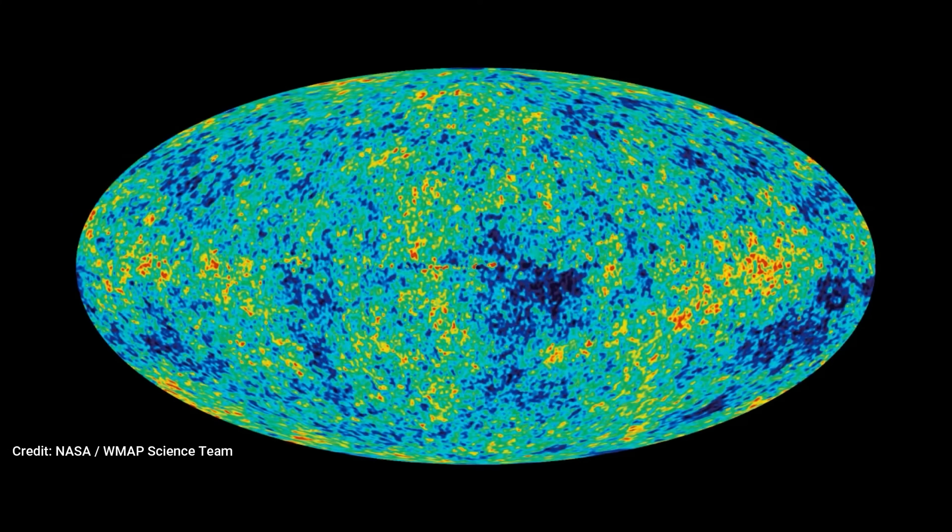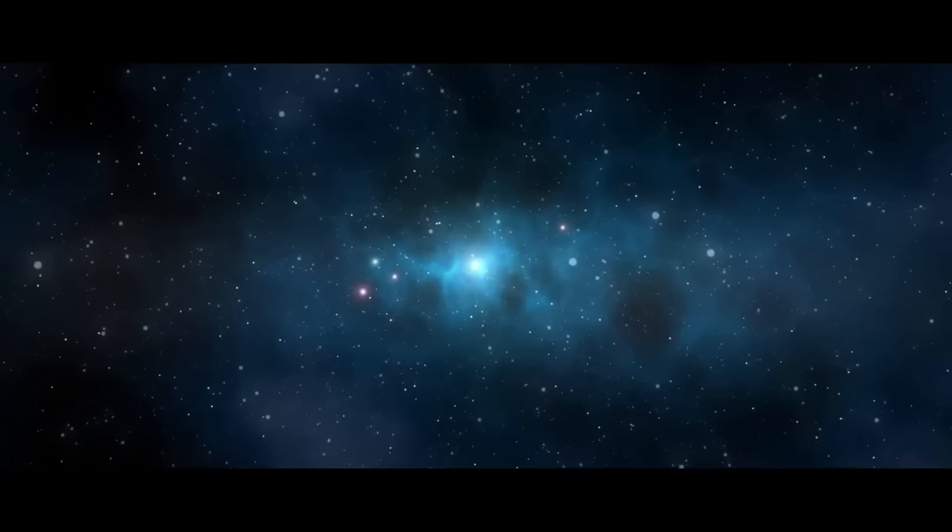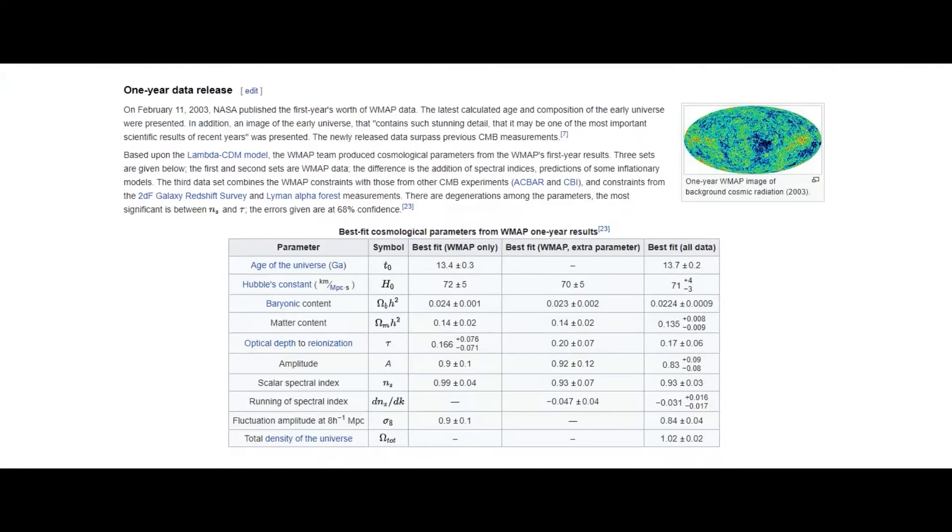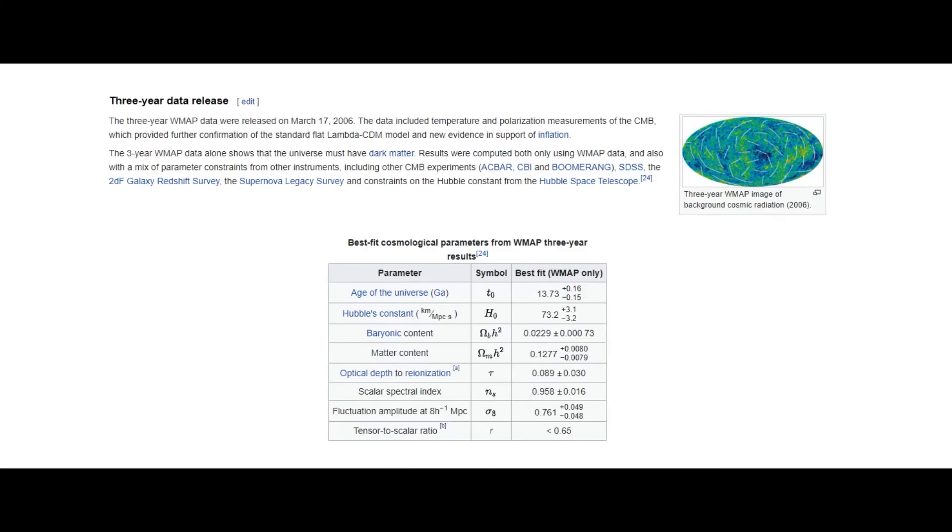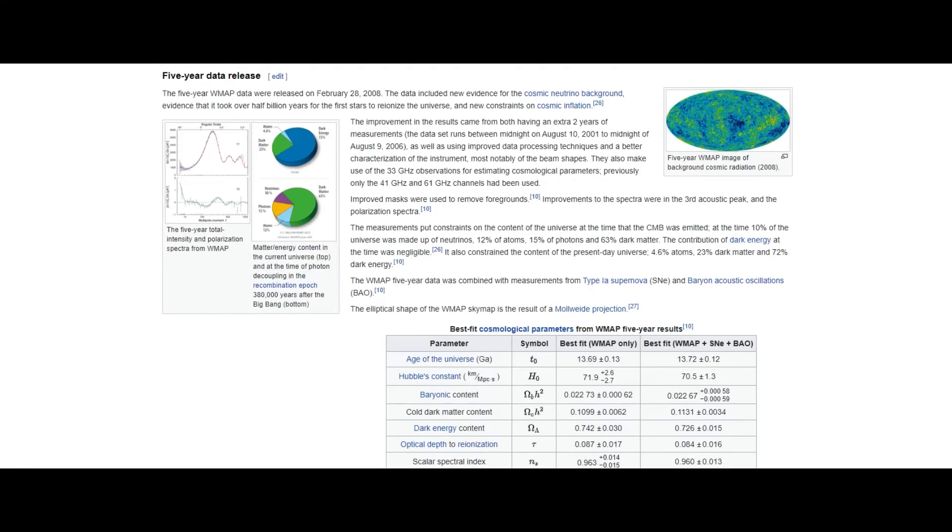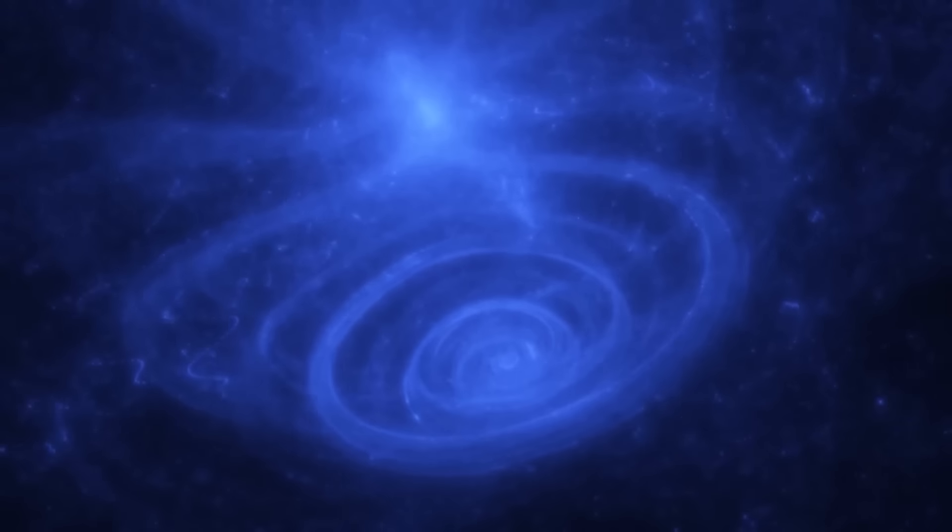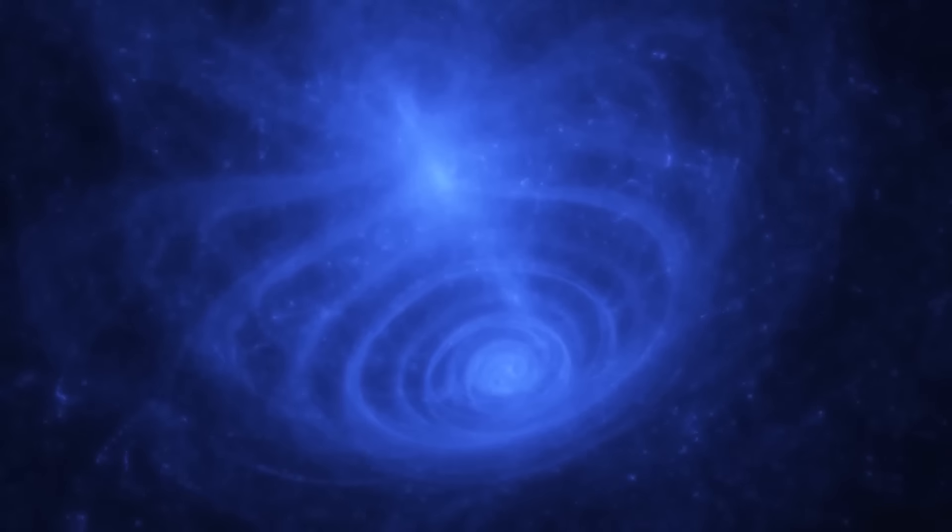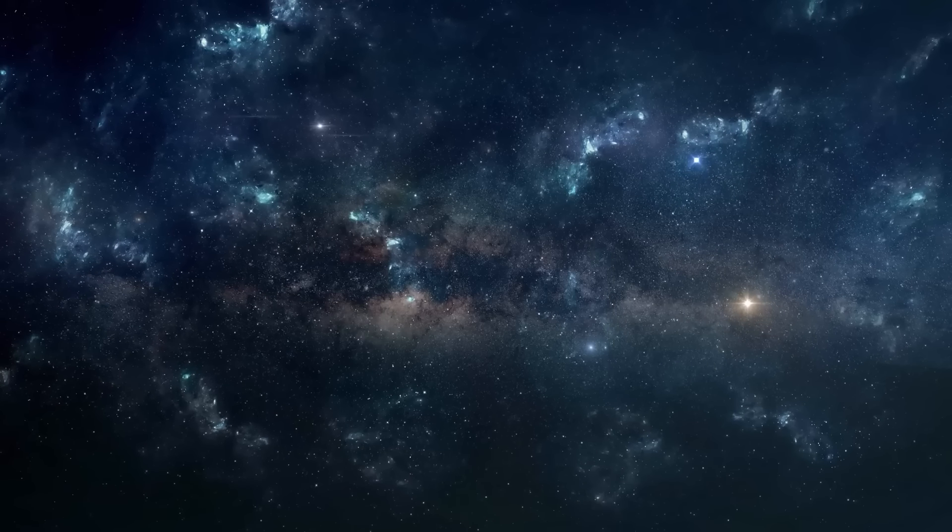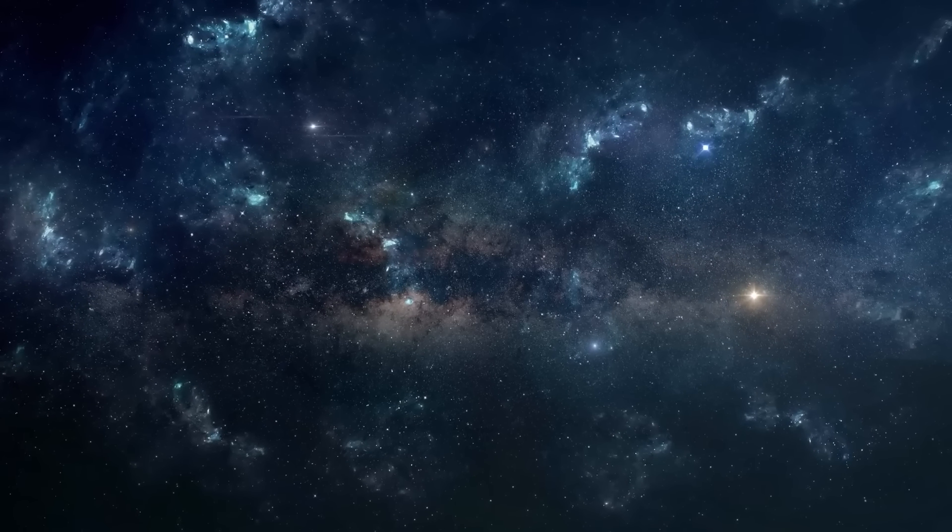One plausible explanation put forth by astronomers is the gravitational influence exerted by massive structures located outside the Hubble volume, the sphere within which we can observe cosmic phenomena due to the finite speed of light. This hypothesis posits that these external gravitational influences, possibly emanating from structures beyond our own universe, are responsible for the observed dark flow.